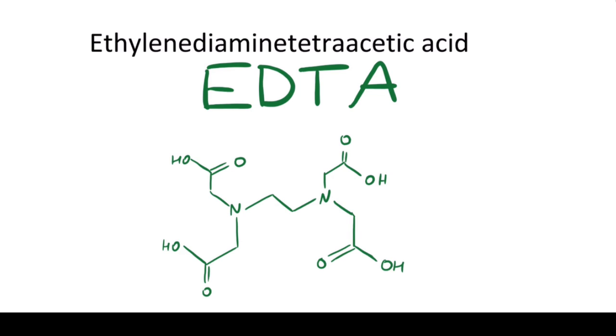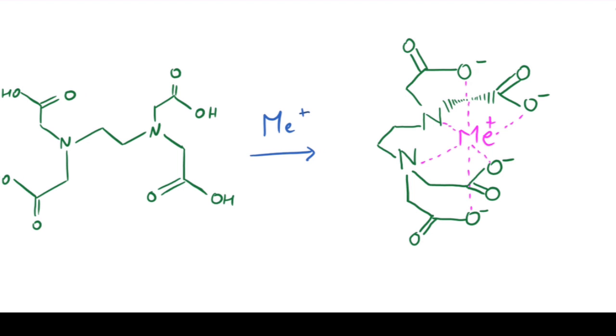is a strong compound that forms one-to-one ratio complexes with most metal ions. When a metal ion is added to EDTA, they form a complex in which the carboxyl groups' negative charges form bonds with the positive charged metal ions.